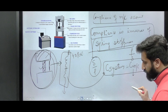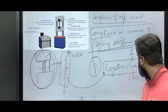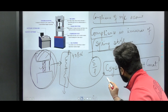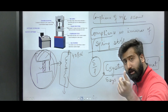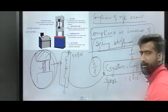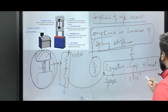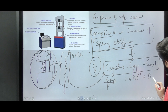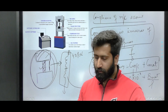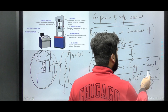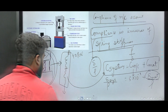The compliance of the machine is given as 5×10⁻⁸ meter per Newton — take care of the units, meter per Newton. The compliance of the system equals delta_system upon P, where delta_system is the total displacement of machine plus material. We need to find the strain at failure in the sample, which means we need to find delta_material.